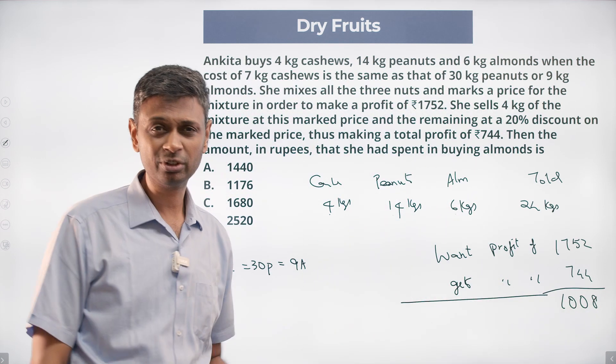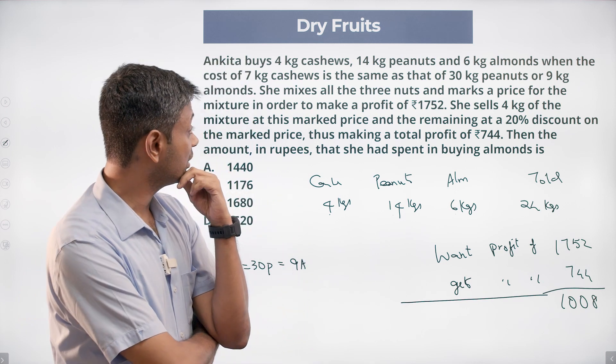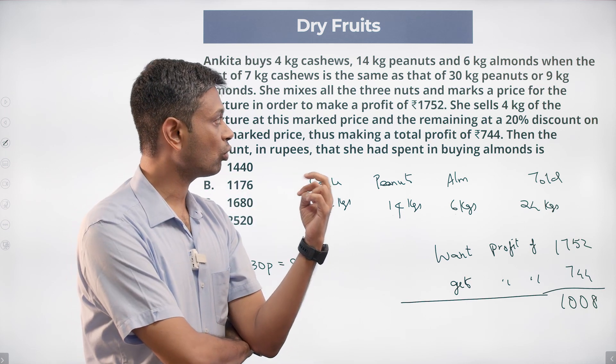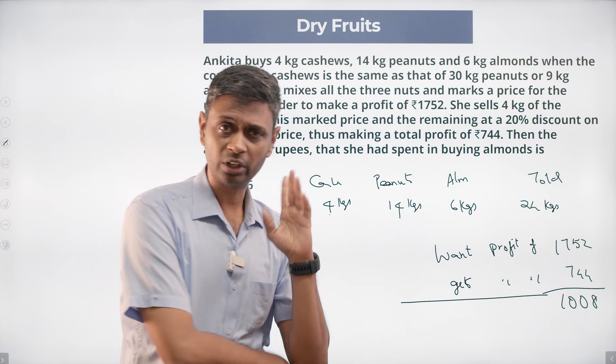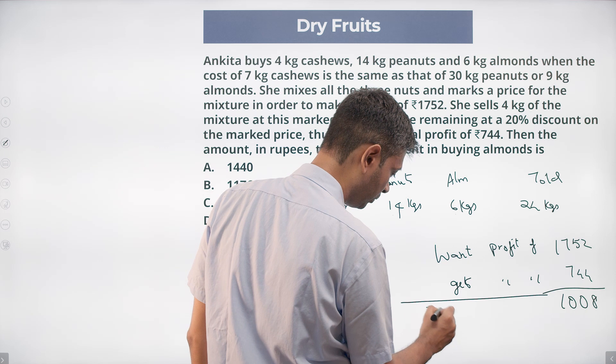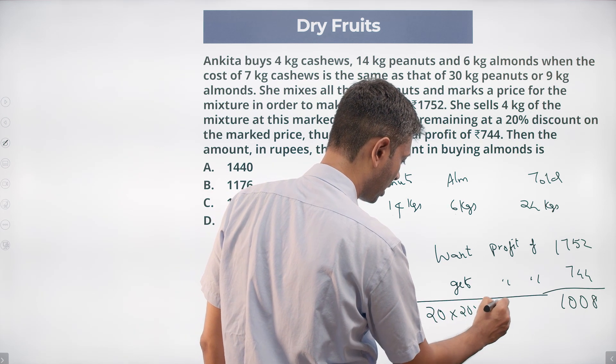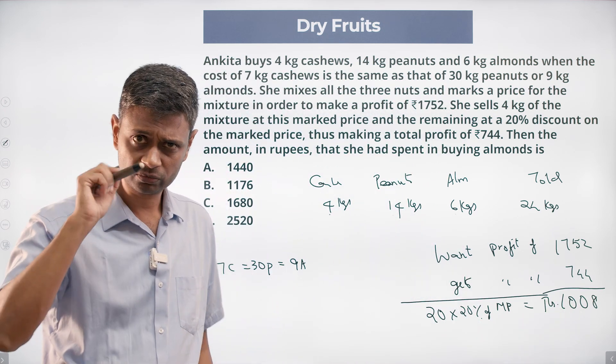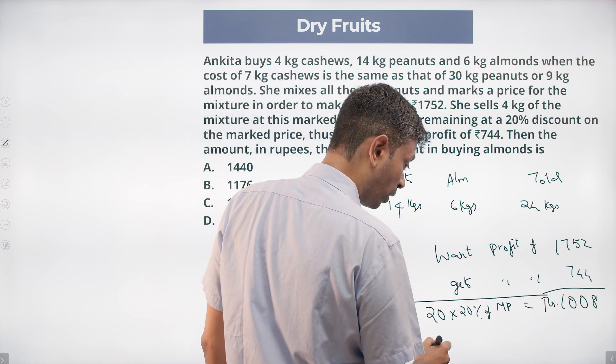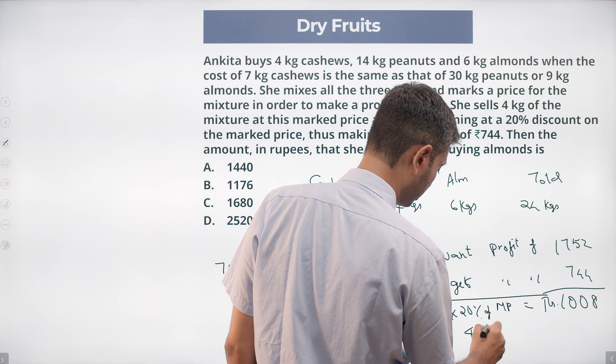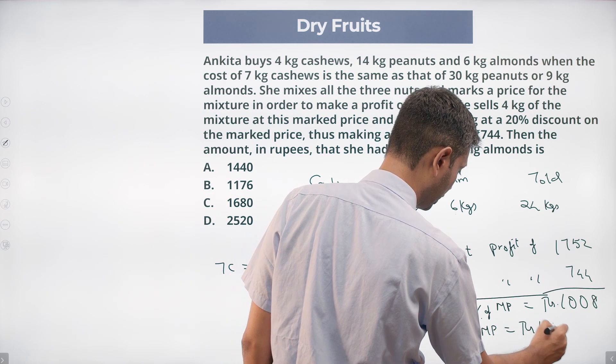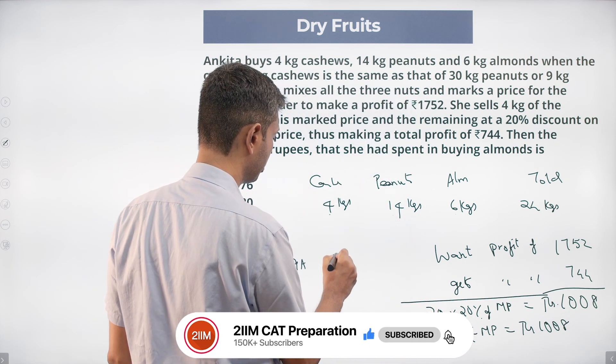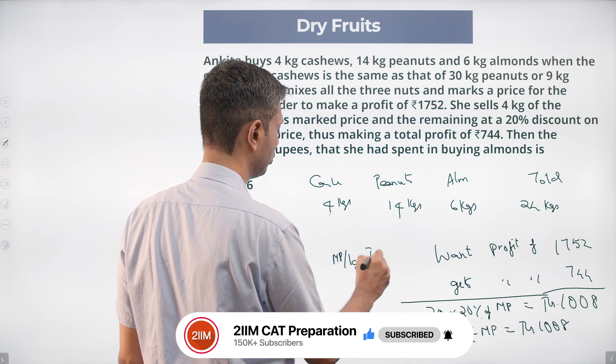Totally there are 24 kilograms, remaining 20 kilograms she sells at a discount of 20% of mark price. That shortfall, so 20 kilograms and 20% discount of mark price gives us 1008. 20 into 20% of mark price equals rupees 1008. 20 into 1/5, this is 4 times mark price equals 1008. Mark price per kilogram is rupees 252.